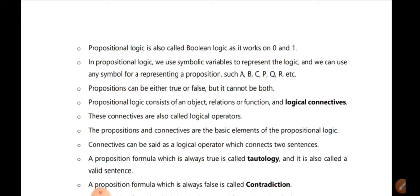Propositional logic is also called boolean logic, as it works on 0 and 1. If we say true or false, yes or no, that is the same boolean logic — 0 or 1. True is equal to 1, false is equal to 0. We use symbolic variables to represent the logic, and we can use any symbol for representing the proposition. Propositional logic does not deal with objects, relations, functions, etc. We will create logical connectives and logical operators.